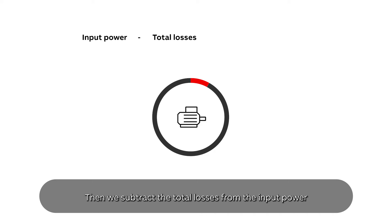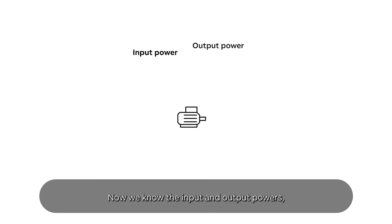Then we subtract the total losses from the input power to get the output power. Now we know the input and output powers, it's easy to calculate the motor's efficiency.